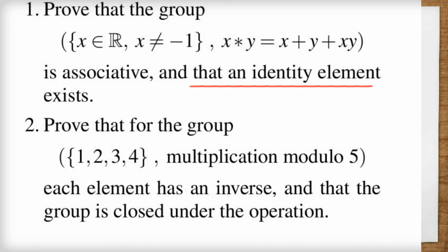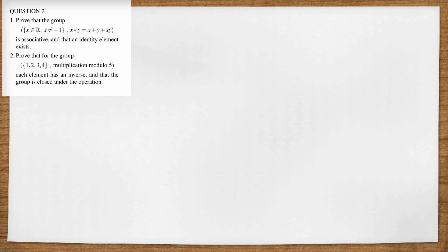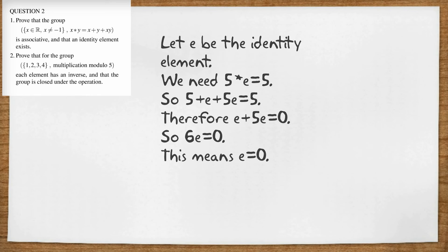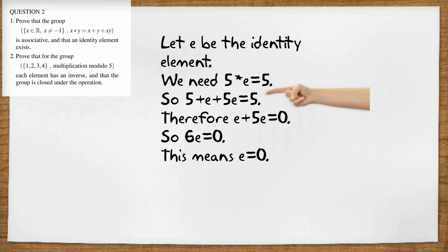Next it asks us to prove the existence of an identity element. I'm just going to find the identity element first, then prove it exists for all elements of the set. So I've just taken five as a random element. Let e be the identity element. That means five star e equals five. So five plus e plus five e equals five. Therefore e plus five e equals zero. So six e equals zero. This means e equals zero. So for this set and operation, it looks like zero is the identity element.